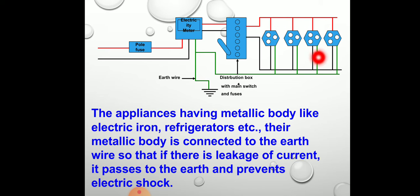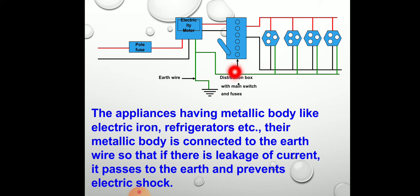If the appliance has a metal body — like an electric iron, refrigerator, etc. — their metallic body is connected to the earth wire, so that if there is any leakage of current, it passes to the earth and prevents us from electric shock.